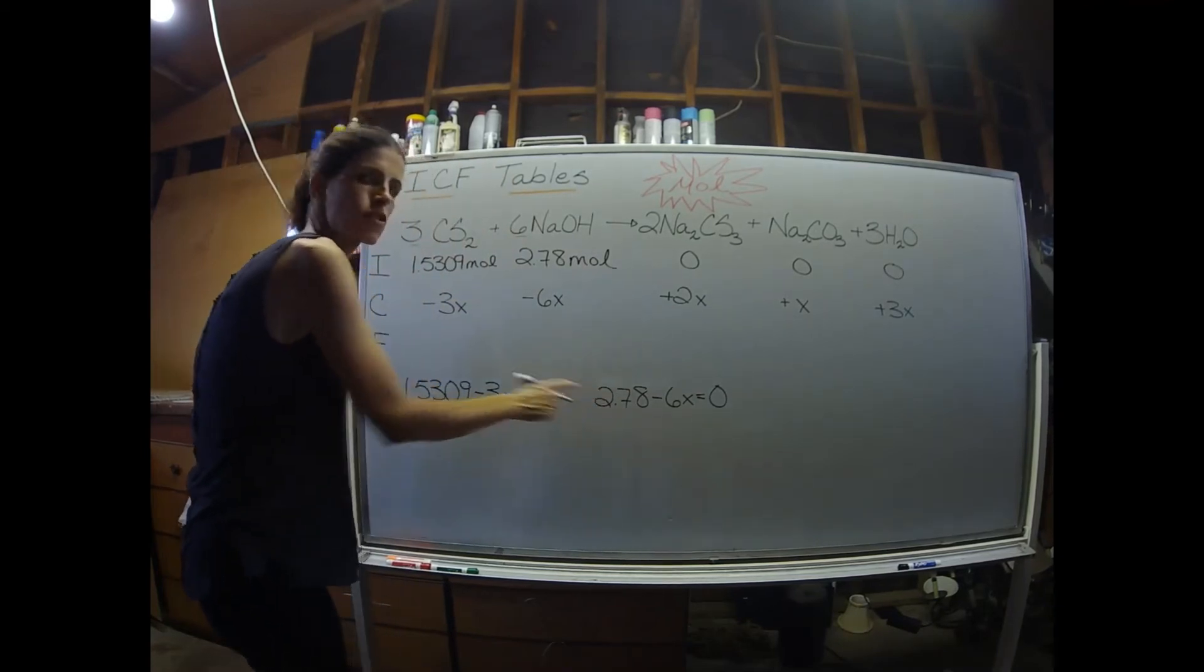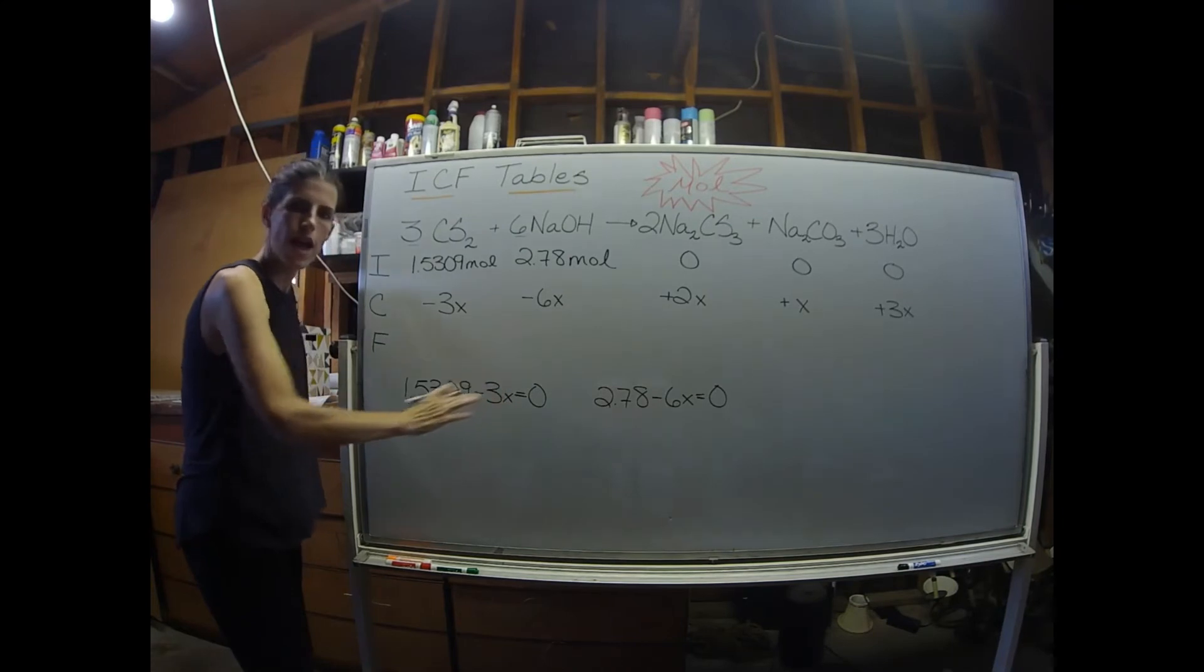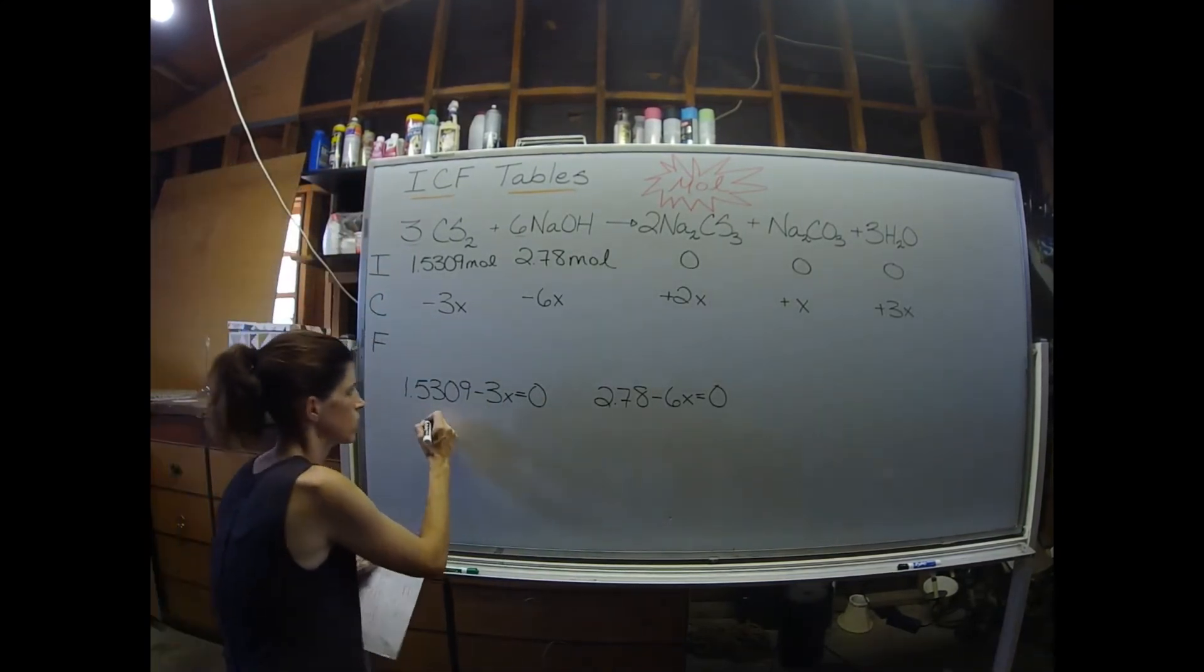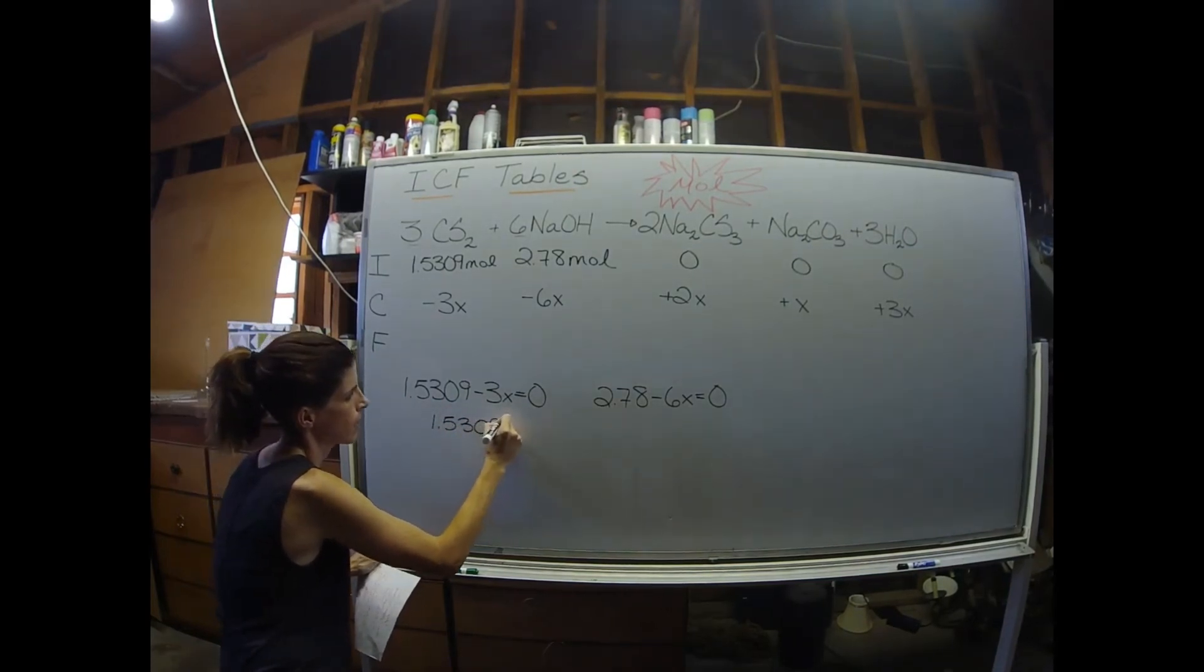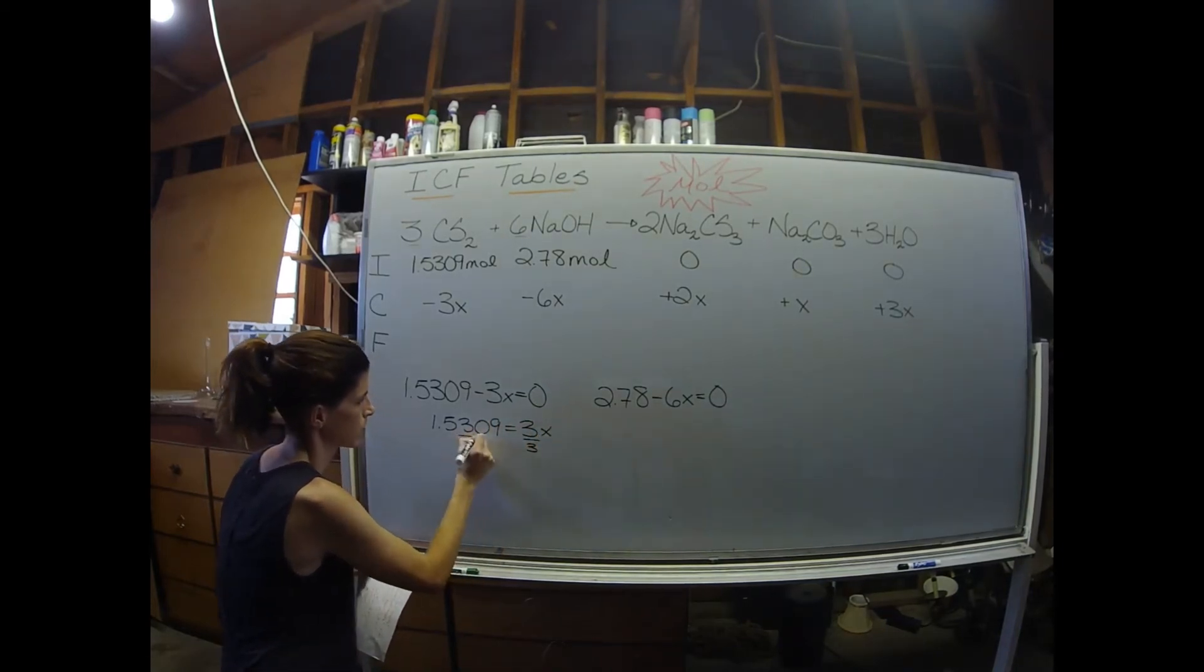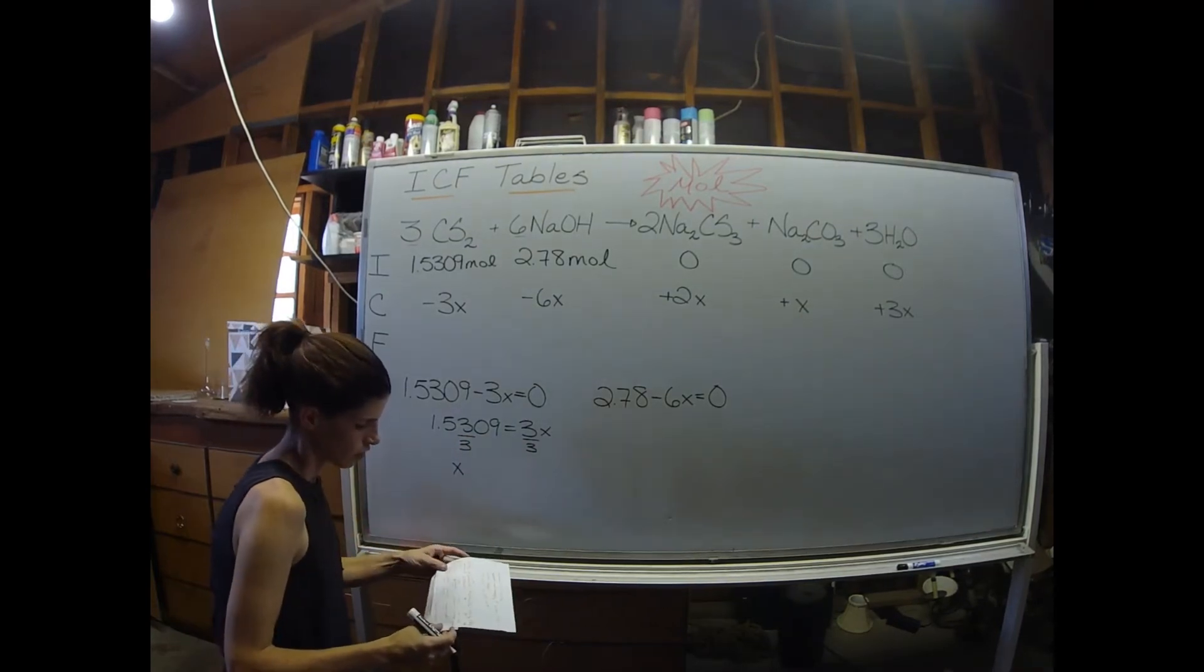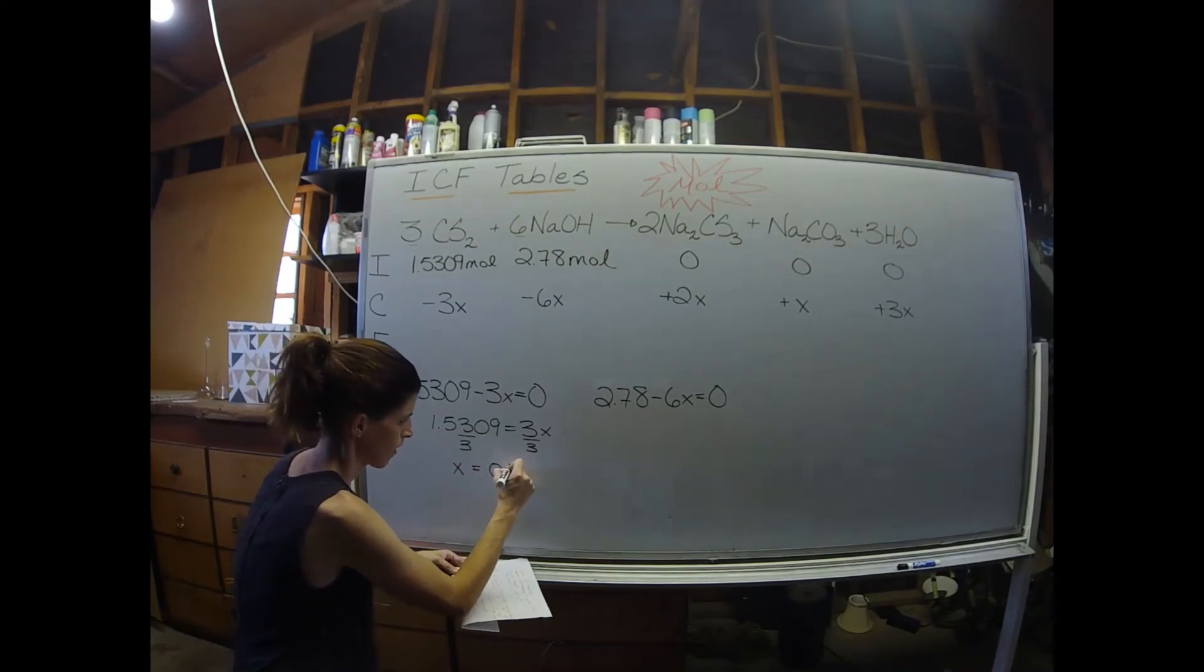Now, think of it as two separate algebra problems. You're going to solve for x on both of these equations. So I'm going to bring over the 3x. I have 1.5309 equals 3x, and I'll divide both sides by 3. So for this reagent, x is equal to 0.5103.